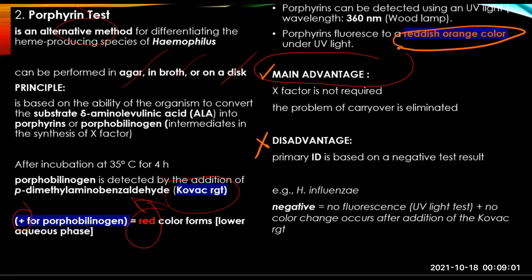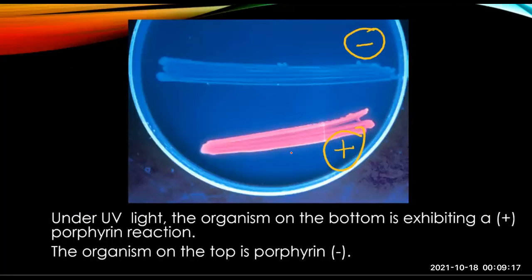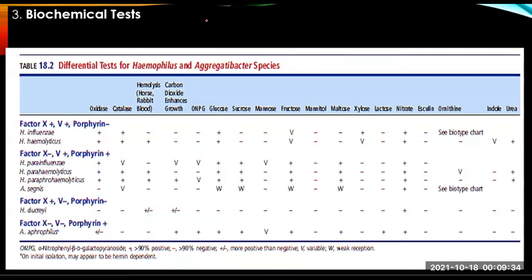Porphyrins can be detected using a UV light at a wavelength of 360 nanometers using a Wood's lamp — porphyrins fluoresce reddish-orange under UV light. The main advantage of the porphyrin test is that the X factor is not needed and the problem of carryover is eliminated. However, the disadvantage is that the primary ID is based on a negative test result — for H. influenzae, negative means absence of fluorescence plus no color change after addition of the Kovac's reagent.